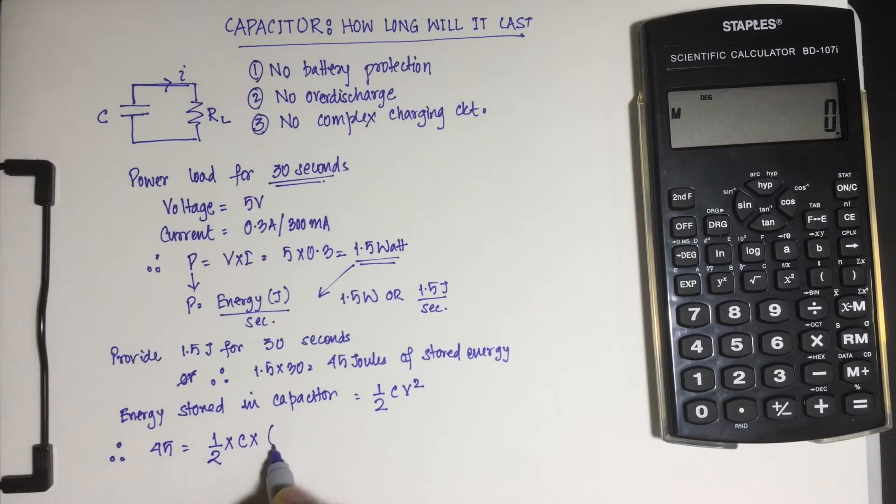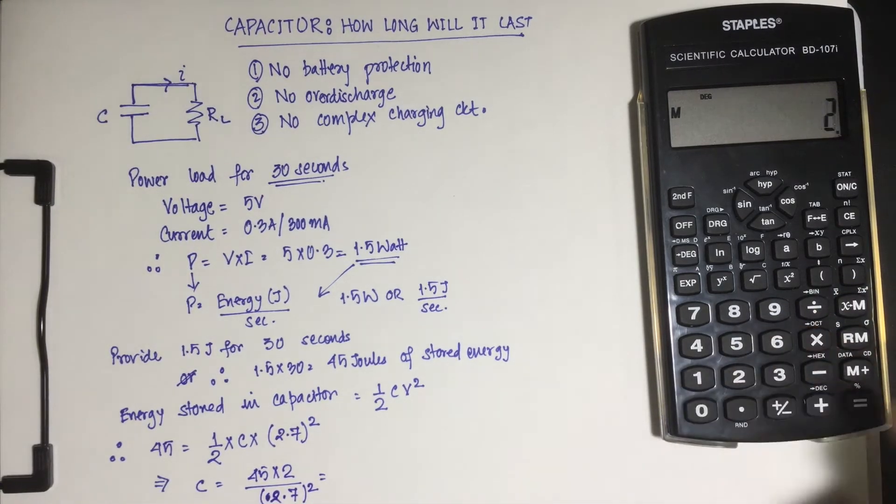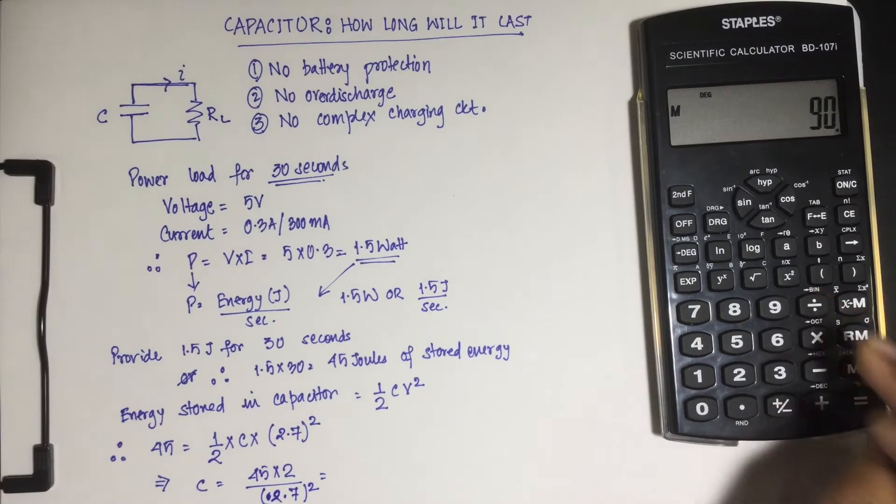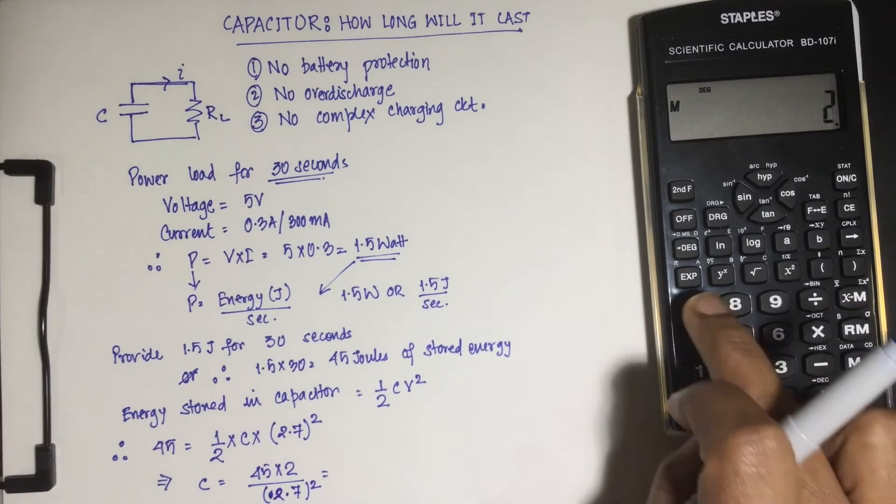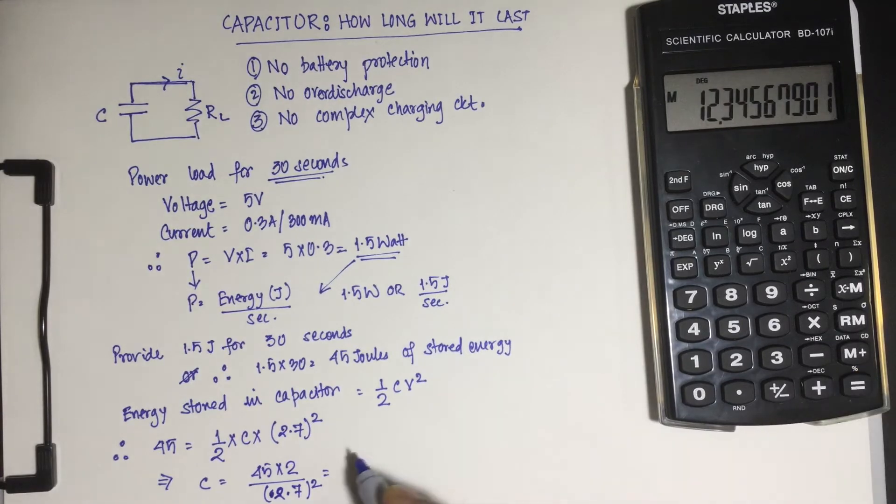We have 45 equals half C into voltage, we are taking 2.7, that's the typical voltage for a lot of supercapacitors. So this implies C is equal to 45 into 2 by 2.7 squared, and that would be equal to 45 into 2 divided by 2.7 squared equals 12.34. This is 12.34 farads, that's the capacitance required to store 45 joules of energy.